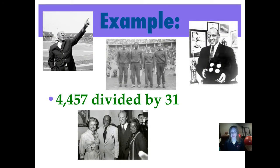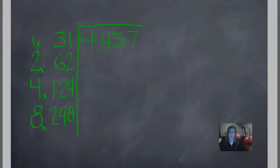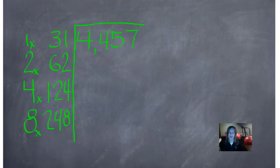Here is our first example: 4,457 divided by 39. And you knew I'd have to put a picture of Jesse Owens with President Ford and his wife Betty, because I just think it's really cool when people get to meet presidents. Let's work it together. This problem could be crazy long, so we're going to kind of smoosh it in. We're going to look at the four first — nothing will go into four, so I'm going to put an X over that.